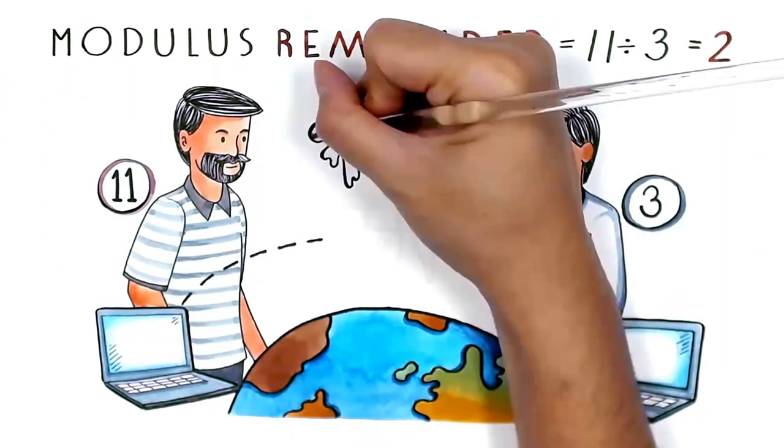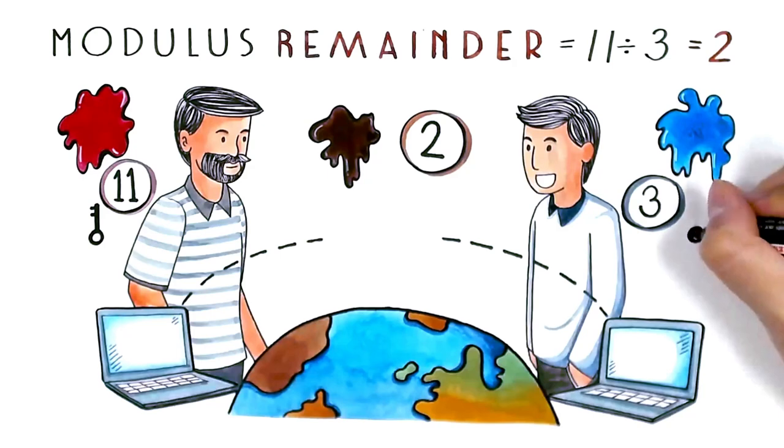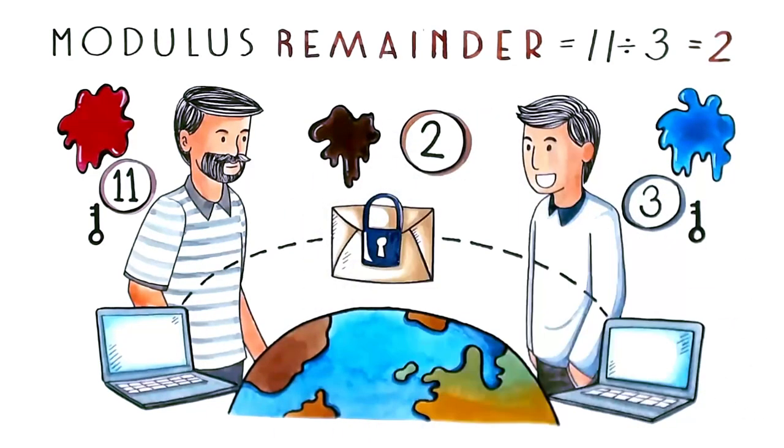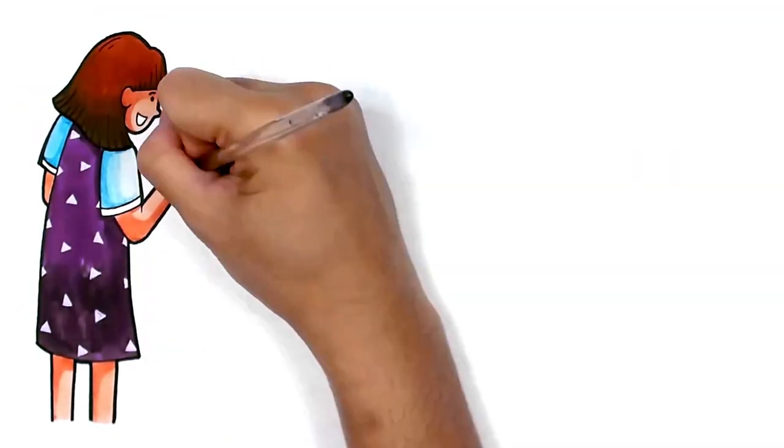Like when you mix paint, you can't separate the two colors. Through this process, you and your friend now have a key to lock and unlock an encrypted message. This process is the base of how internet communications are secured today.